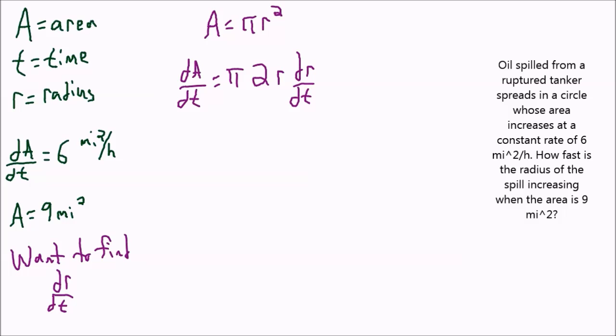Let's substitute in some values. I know that dA over dt is equal to 6. So we'll have 6 equals pi times 2. We don't know what R is, so we're going to leave R right here. And dr over dt is what we're trying to find.